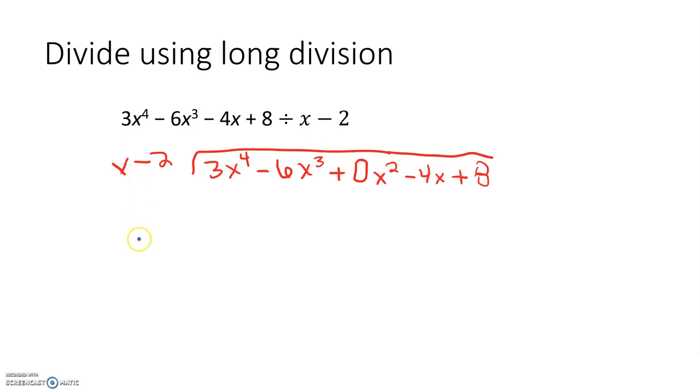Just as before, we're going to look at the first term here and the first term here. What times X would give me 3X to the 4th? So that's going to be 3X cubed. I multiply that through – 3X times X gives me 3X to the 4th. 3X cubed times negative 2 gives me negative 6X cubed. I draw my line and I change my signs. This time, both the first term and the second term are eliminated. So I bring down my 0X squared. Well, what times X would give me 0X? Well, that would simply be another 0.